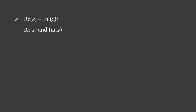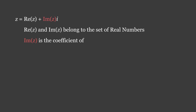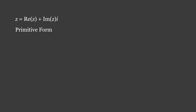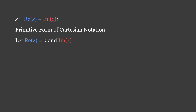Note that Re(z) and Im(z) belong to the set of real numbers, and that the imaginary part is the coefficient of i. The imaginary unit acts like a variable with a coefficient of Im(z). This is the most primitive form of what we call Cartesian notation, but it is standard practice to let the real part equal a and the imaginary part equal b. Cartesian notation is often displayed as z equals a plus bi.